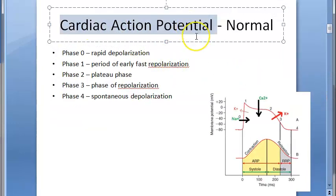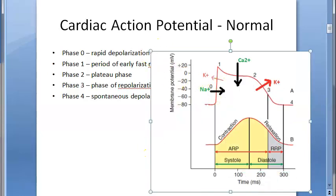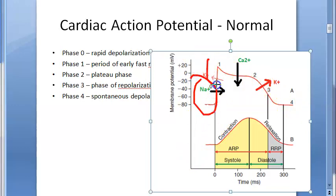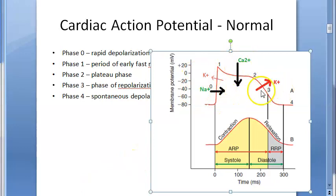The normal cardiac action potential — you would have learned this diagram in physiology. The x-axis is time and the y-axis is potential. There are five phases: phase 0, 1, 2, 3, and 4. There is sodium influx, then calcium influx, then potassium efflux. This is what happens to maintain the cardiac rhythm.